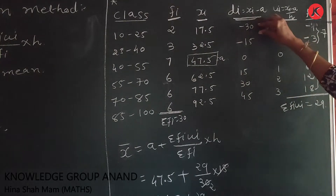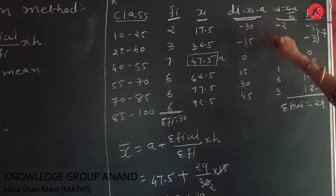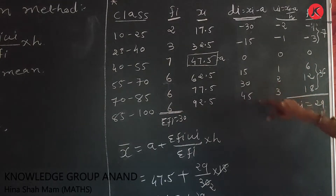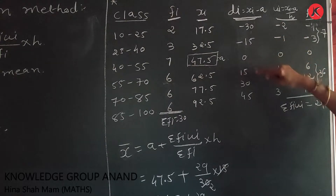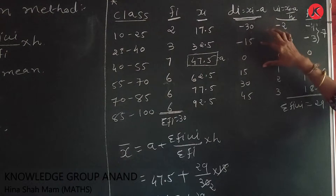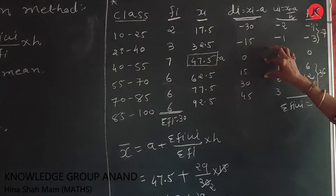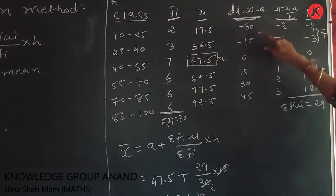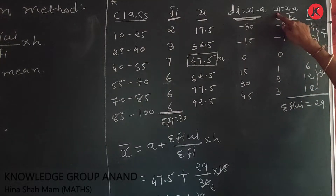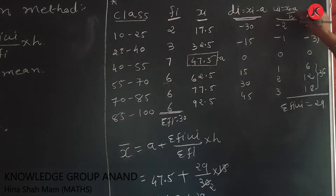Looking at the di values, the common factor is 15 — that means 15 is a common multiple factor and also our class size. Therefore we divide by 15 to get ui, where ui = (xi - a) / h.